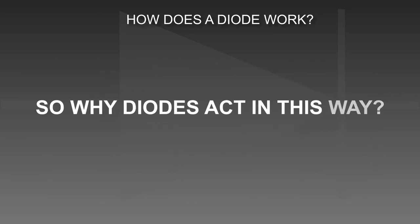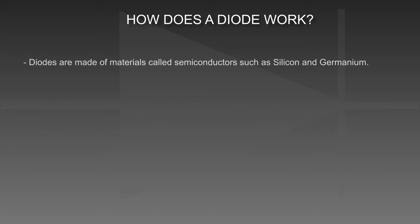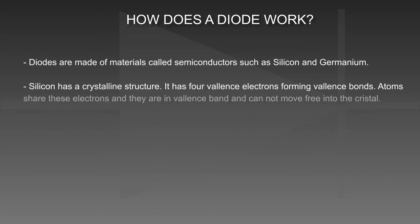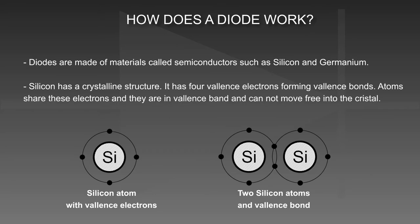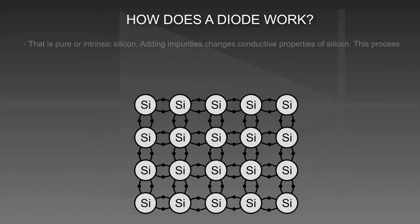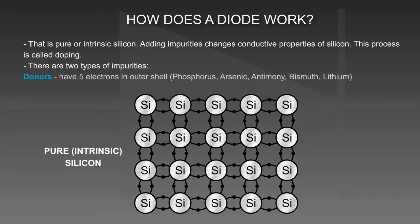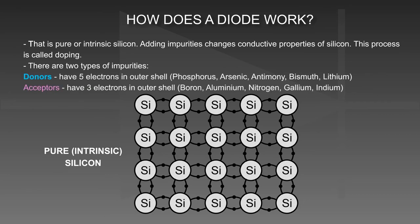So why do diodes act in this way? Diodes are made of materials called semiconductors, such as silicon and germanium. Silicon has a crystalline structure with four valence electrons forming valence bonds. Atoms share these electrons, which are in the valence band and cannot move freely in the crystal. That is pure or intrinsic silicon. Adding impurities changes the conductive properties of silicon — this process is called doping.